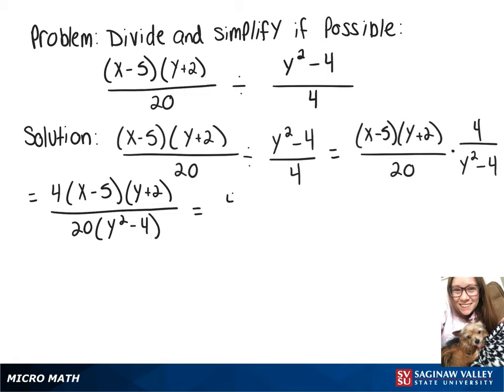So the top part we're going to leave alone for now, so it's just 4 times x minus 5 times y plus 2. On bottom I'm going to rewrite 20 as 4 times 5, and then we have a difference of squares which we'll factor into y plus 2 times y minus 2.